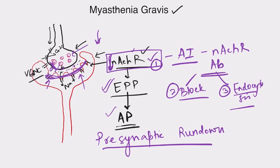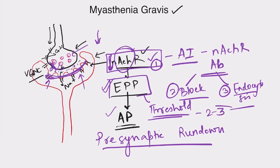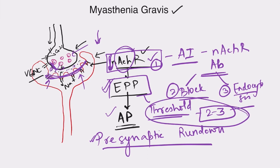This pre-synaptic rundown happens physiologically but does not affect muscle contraction, because normally there is a safety factor. In the morning, the amount of acetylcholine released is so high that EPP always reaches threshold — in fact, the change in potential is two to three times the threshold. So an action potential is always generated. Even as pre-synaptic rundown occurs and acetylcholine release decreases, the safety factor ensures EPP still reaches threshold.